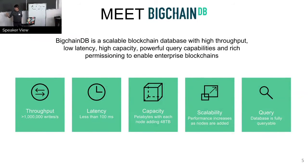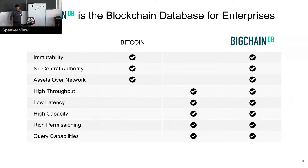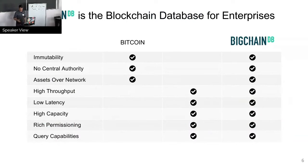Just a little bit more about BigchainDB. We figured we have some really cool properties from the Bitcoin network — mainly immutability, no central authority, it's fully decentralized, and you could put assets over the network. And then you have these big databases which have been out there for more than 20 years — they've proven high throughput, low latency, capacity, permissioning, and querying. Our goal with our project is to combine all of these nice features into one single thing.